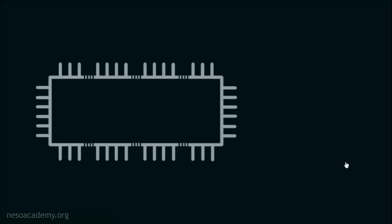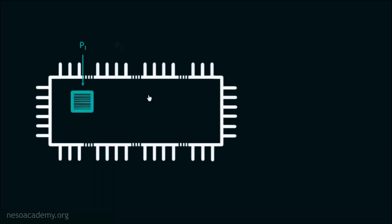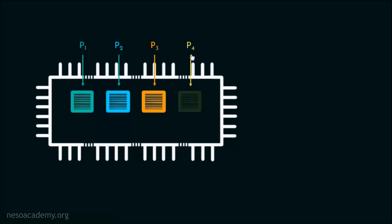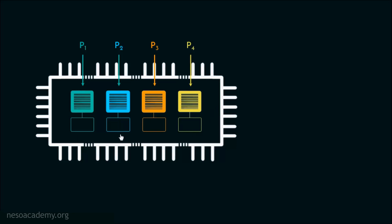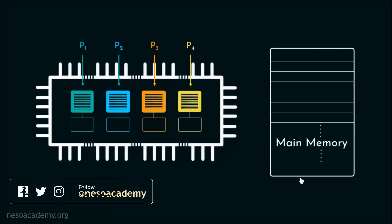Consider this organization where we have four different processors: P1, P2, P3, and P4, and all these processors have their own private caches. For the sake of simplification we are considering all processors have only one single private cache. As the shared storage we are considering the main memory, which is connected to this organization with the help of the system bus.